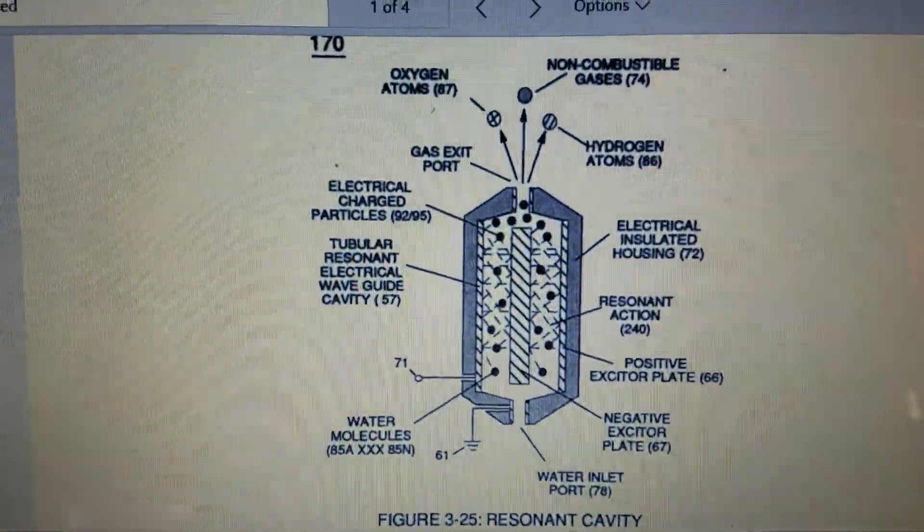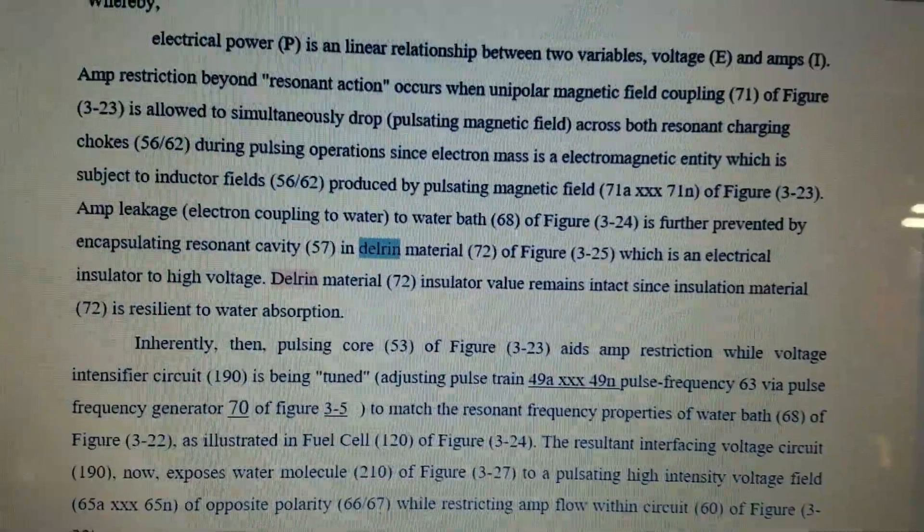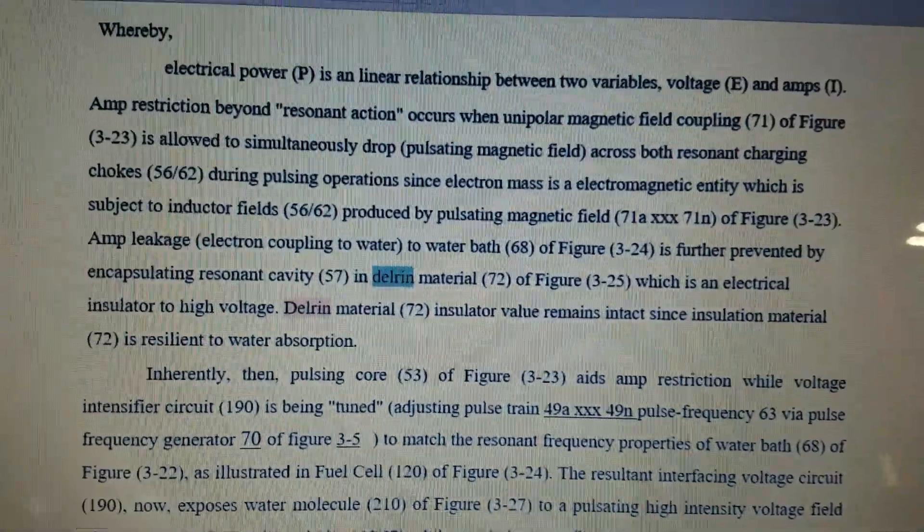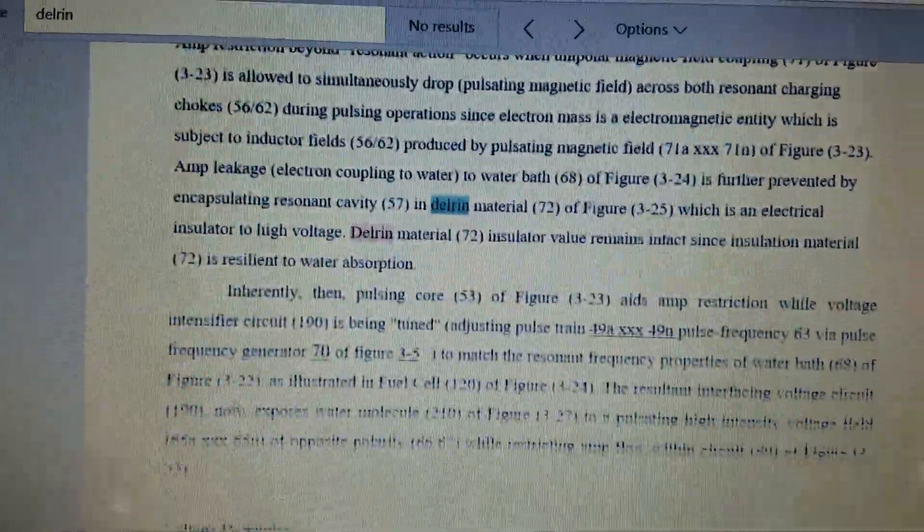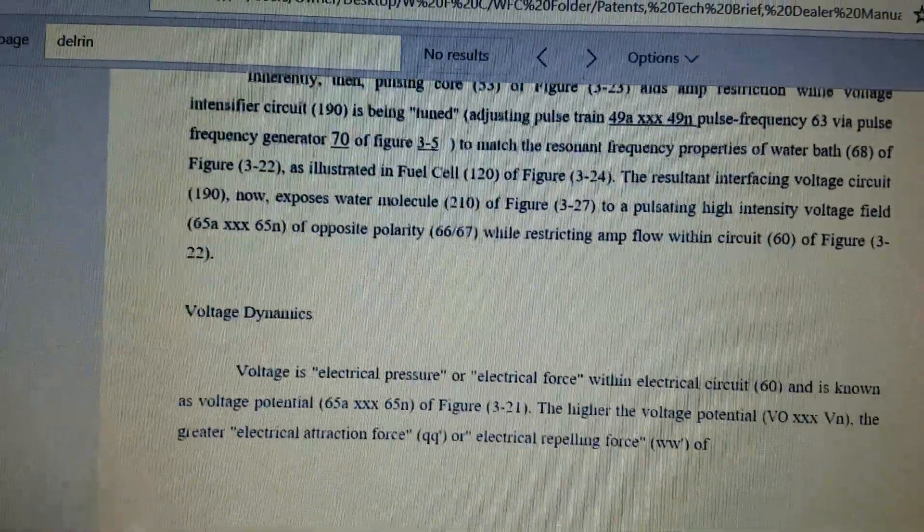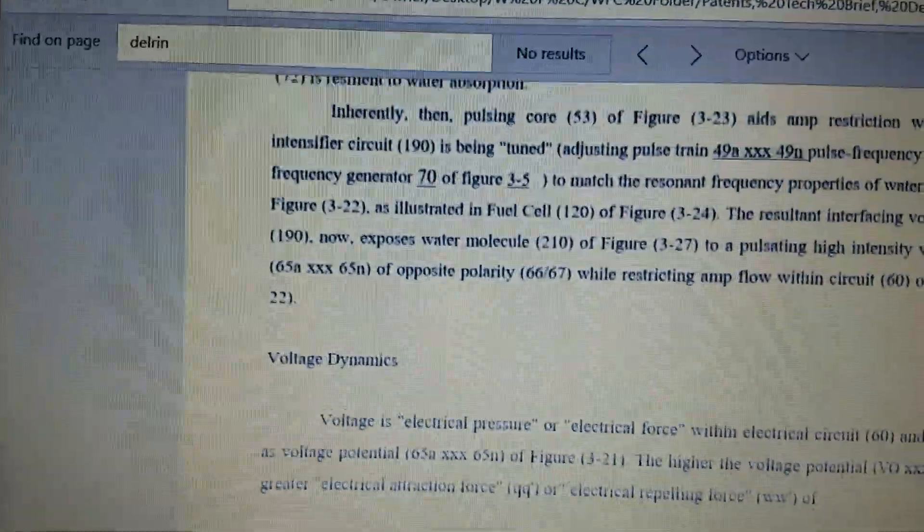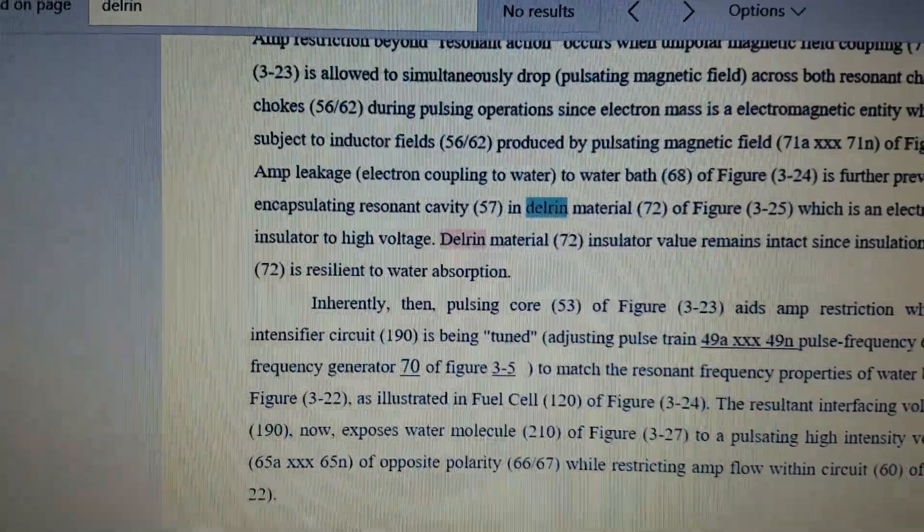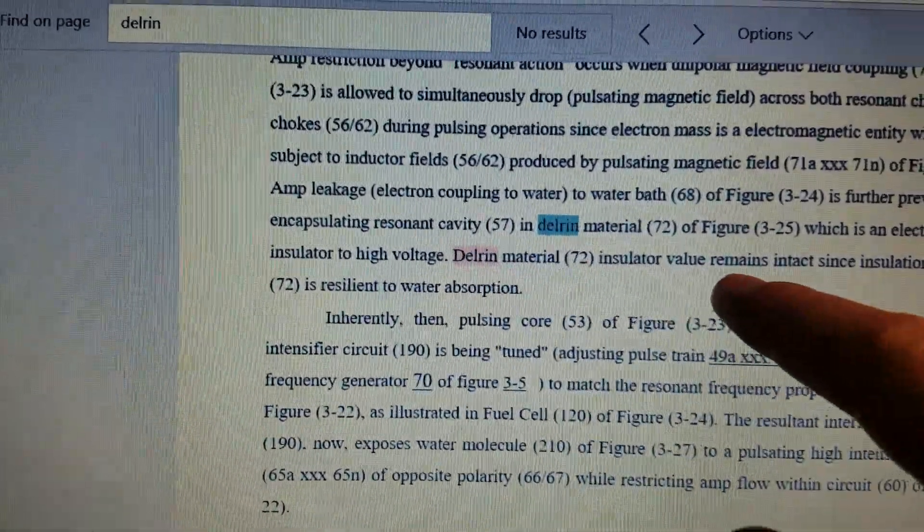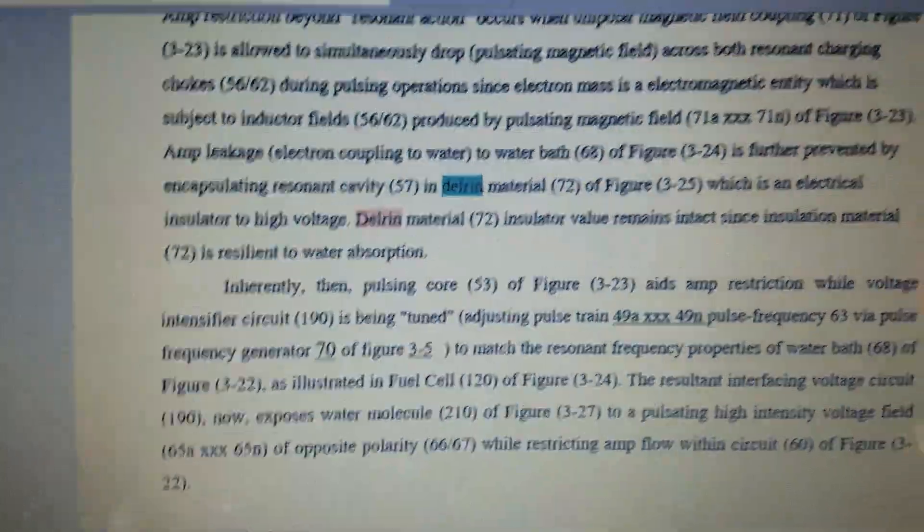So I believe he does also state that that is Delrin here in the tech brief. Let's see. Yeah, here we go. This is on page 3-10, I believe. 3-11. So it says encapsulating resonant cavity in Delrin, Delrin material insulator. So that's one important thing to keep in mind.